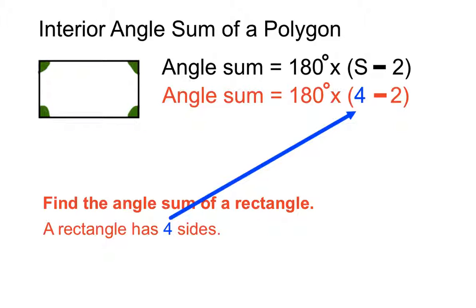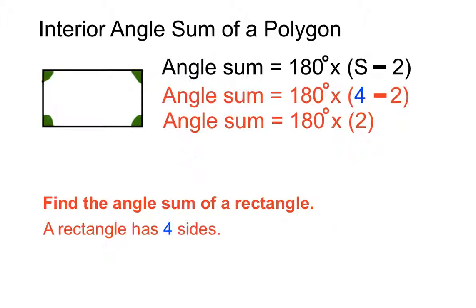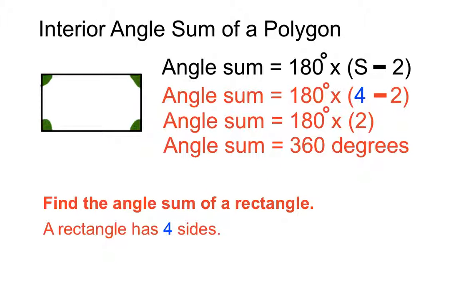So we can have angle sum equals 180 degrees times four minus two, and we'll do that four minus two first, because it's in the bracket. And four minus two is two, of course. So we end up with 180 degrees multiplied by two. And that is 180 degrees times two. Angle sum is 360 degrees. Now, a rectangle is a quadrilateral, and perhaps that's a fact you already know.